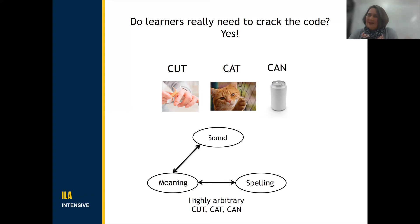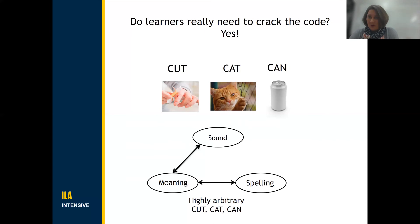There is a case in some writing systems, like Chinese, where there is quite a lot of arbitrary learning required. But full literacy in Chinese requires knowledge of only about 4,000 characters, whereas the average 20-year-old in English can recognize about 70,000 words. And we estimate that children are exposed to around 5,000 different words just in the first year of reading instruction in English.